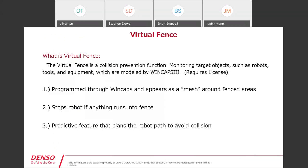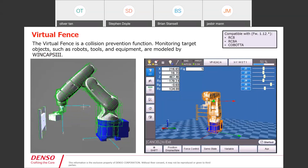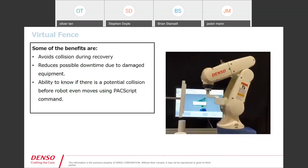Virtual fence is more of a collision prevention function. You create a fence around different objects in your cell — the robot, other static objects in the cell itself — and it creates a mesh around the fenced areas to prevent collision. It stops the robot if anything runs into the fence, and it's a predictive feature that plans the robot's path to avoid collision. On the left you can see the green mesh around the robot — you can make fairly tight or loose fencing around parts, controlling exactly how precise you want the fenced areas to be. The benefits include avoiding collision during recovery, reducing possible downtime due to damaged equipment, and the ability to know if there's a potential collision before the robot even moves, using our Practice Pack script commands.